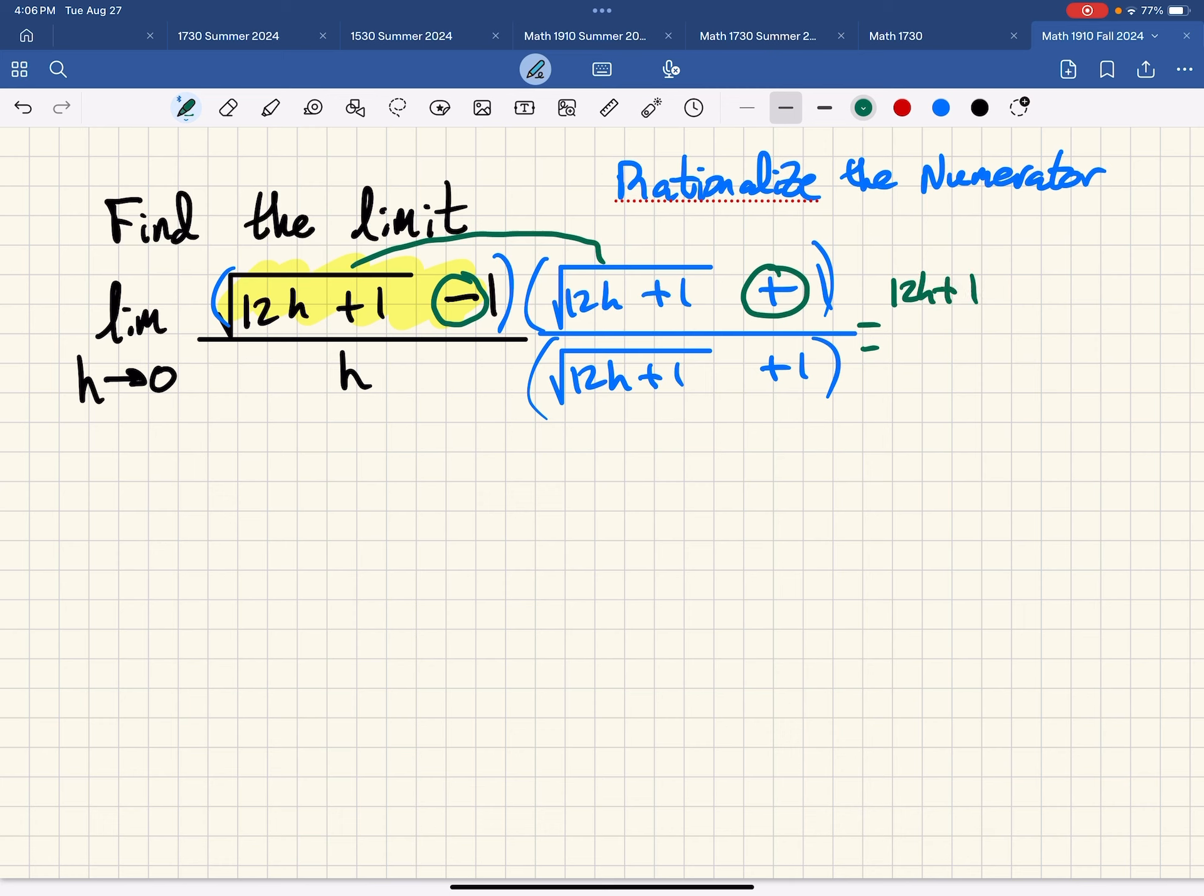And then since these are conjugate pairs in the outside and inside terms they would cancel and then the last term would be minus 1. Then in the denominator we would still have the h and then an additional factor square root of 12h plus 1 and then plus 1.